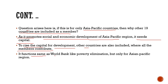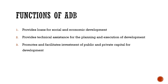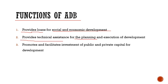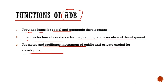It functions the same as the World Bank, like poverty elimination, but only for the Asian Pacific region. The functions of the Asian Development Bank are: first, it provides loans for social and economic development. Second, it provides technical assistance for planning and execution of development — if any country needs technical assistance, ADB is going to provide it. Third, it promotes and facilitates investments of public and private capital for development.